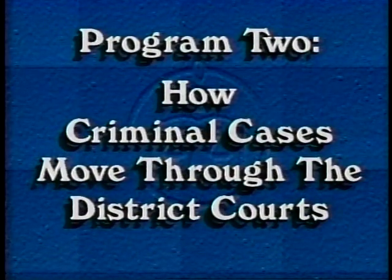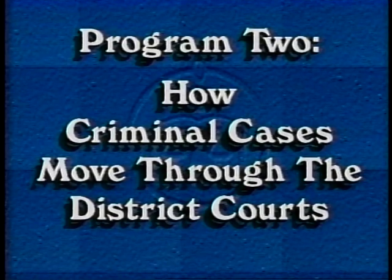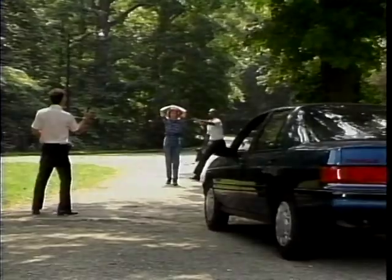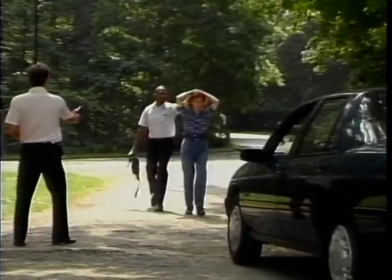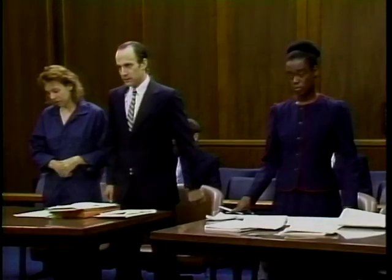We'll use a hypothetical criminal case to show you how the features of the Act affect your docketing responsibilities. The case, United States v. Smith and Jones, is a variation on a case used in another Federal Judicial Center program, How Criminal Cases Move Through the District Courts — Program 2 of the Center's five-part video series. It tracks a two-defendant drug case from arrest through sentencing and post-judgment proceedings. If you are not familiar with the major steps of the criminal process, we strongly recommend watching that program before this one.